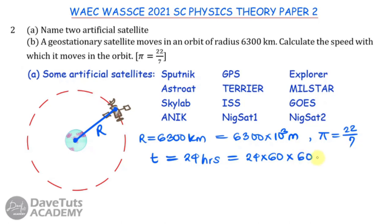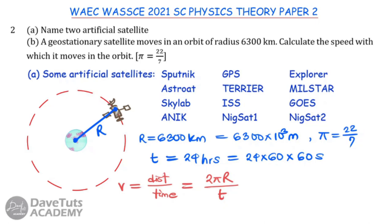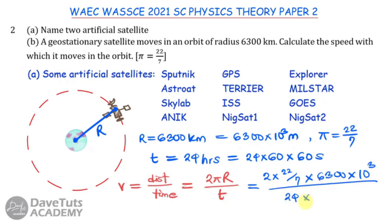Speed equals distance over time. The distance traveled is the circumference of the orbit, so velocity v = 2πR/T. Inputting into the calculation: v = 2 × (22/7) × 6300 × 10³ ÷ (24 × 60 × 60). Working this out gives 1375/3, or approximately 458.3 meters per second as the orbital speed of the geostationary satellite.